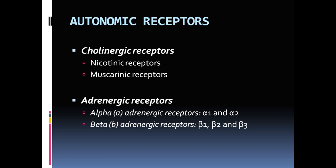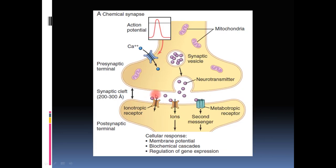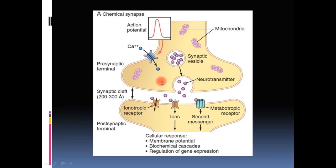There are two possibilities for how receptors convey messages. First, the receptors may be ion channels — when the neurotransmitter binds, ion channels open. If positive ions enter the cell, it excites the cell; if negative ions like chloride enter, it inhibits. Receptors that directly contain and open ion channels upon neurotransmitter binding are called ionotropic receptors.